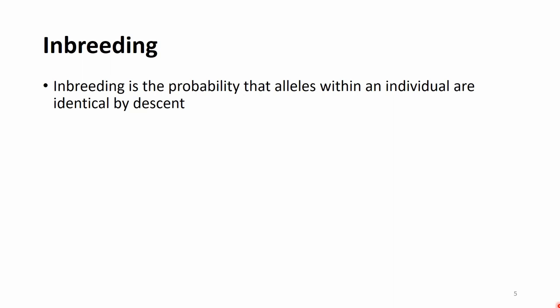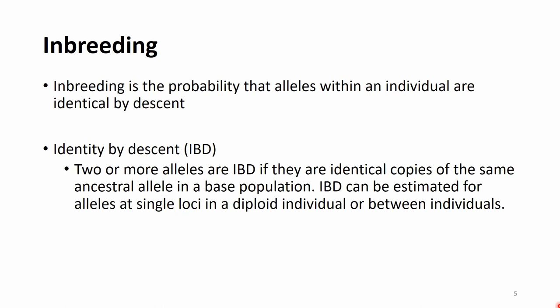Inbreeding is formally defined as the probability that alleles within an individual are identical by descent. Identity by descent, or IBD, is when two or more alleles are identical copies of the same ancestral allele in the base population. IBD can be estimated for alleles at single loci in a diploid individual or between individuals.